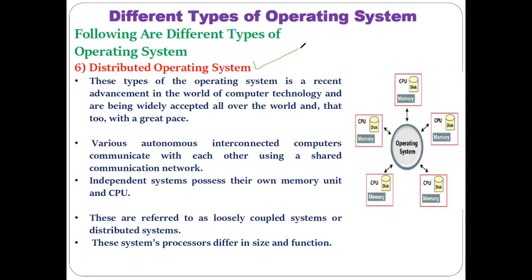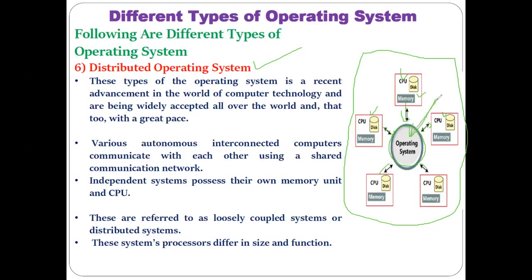The next important and popular operating system is the Distributed Operating System. You can see the scenario in the figure. There is a central point where the operating system is installed on some machine, and this operating system is shared by all other client machines. Each of those client machines has a CPU, disk, and memory, but they are not individually running their own operating system — they all refer to and share the centrally located operating system.